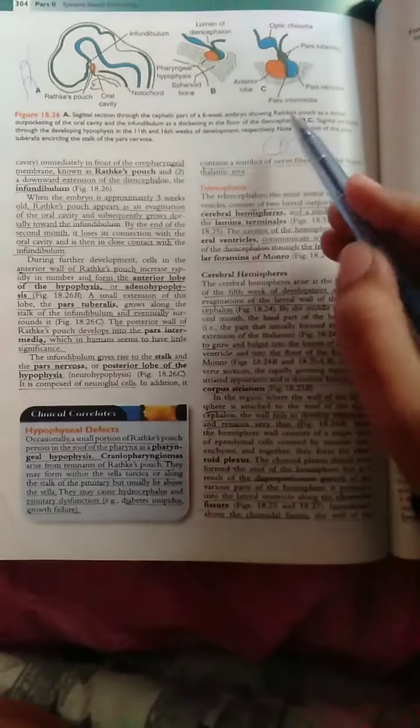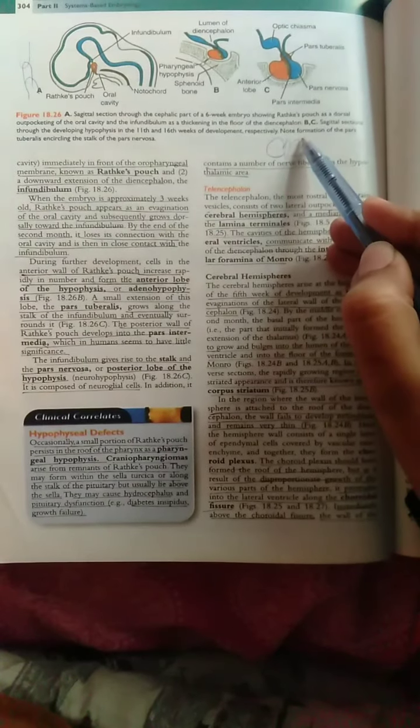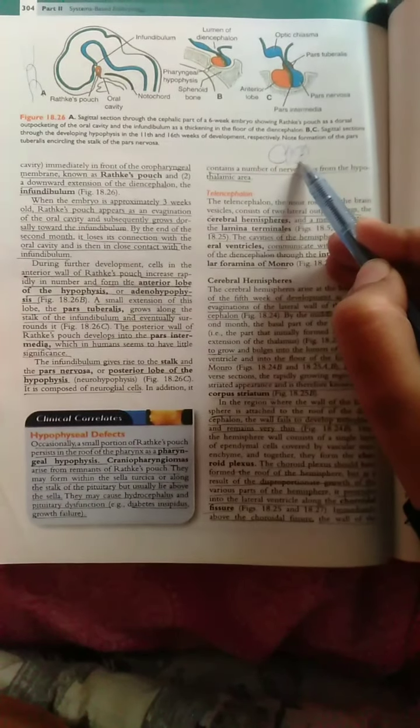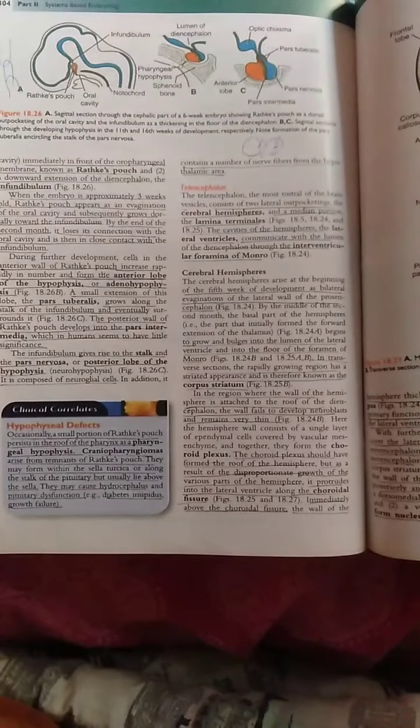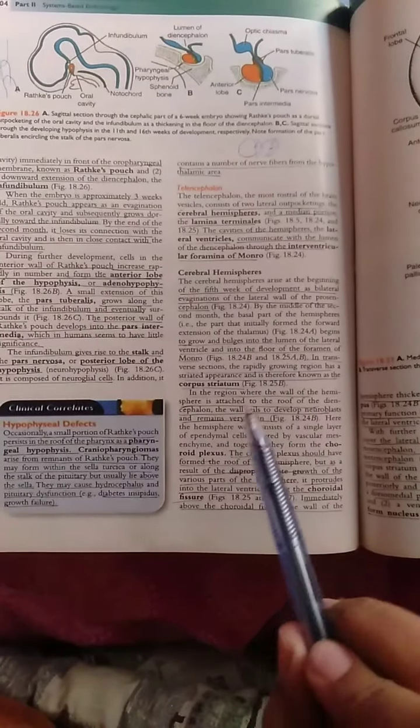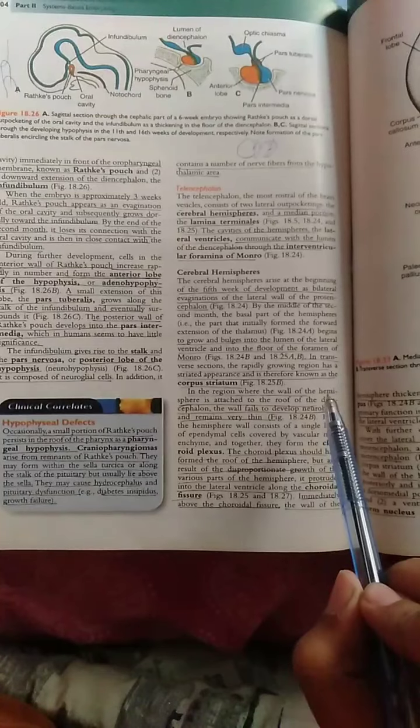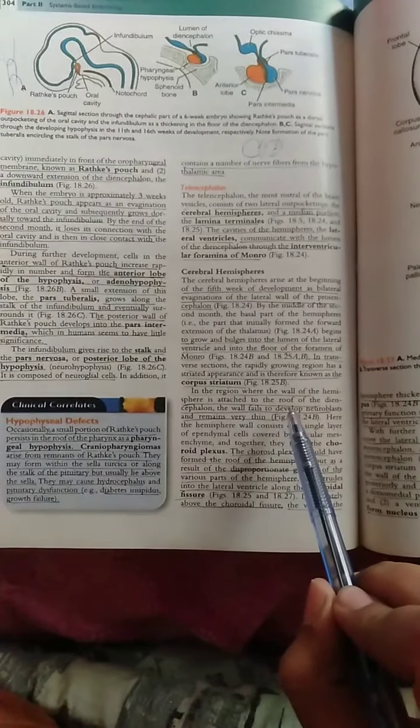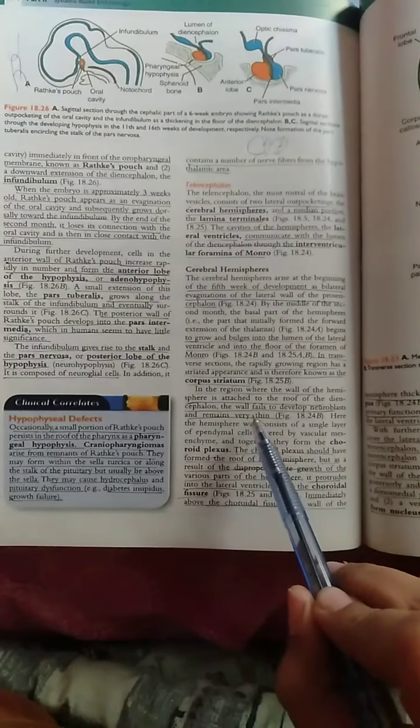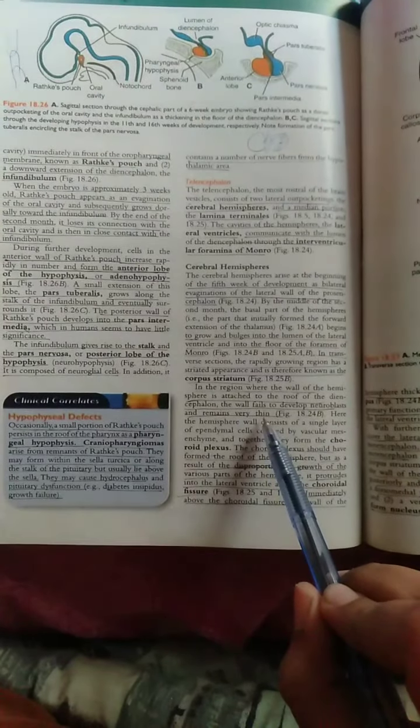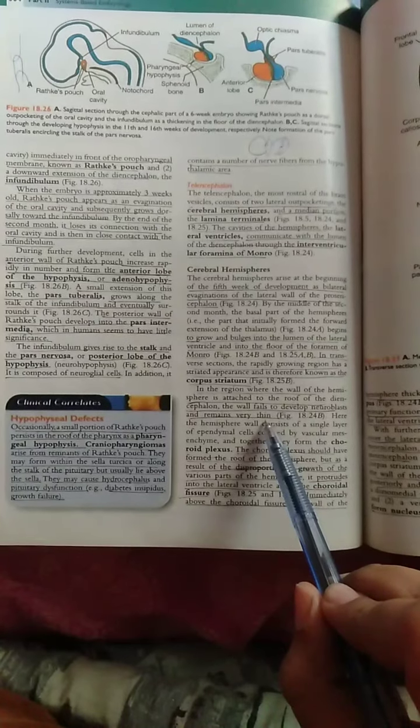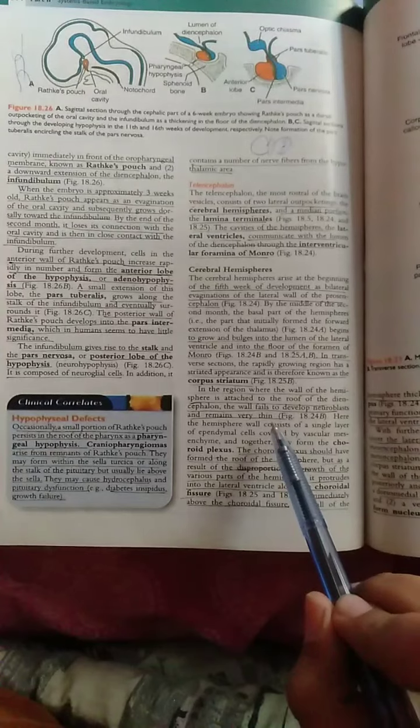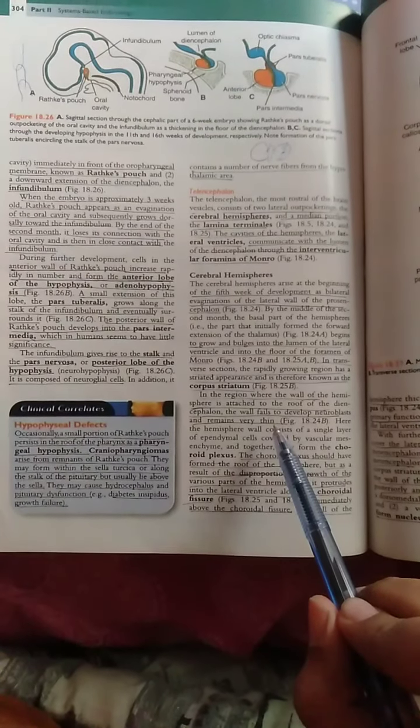The medial region which can be attached with the wall of the hemispheres will be attached with the diencephalon roof. It will not be neuroblasts, it will be thin. We have only a single layer of ependymal cells and pia mater will cover it. We will call it tela choroidea.